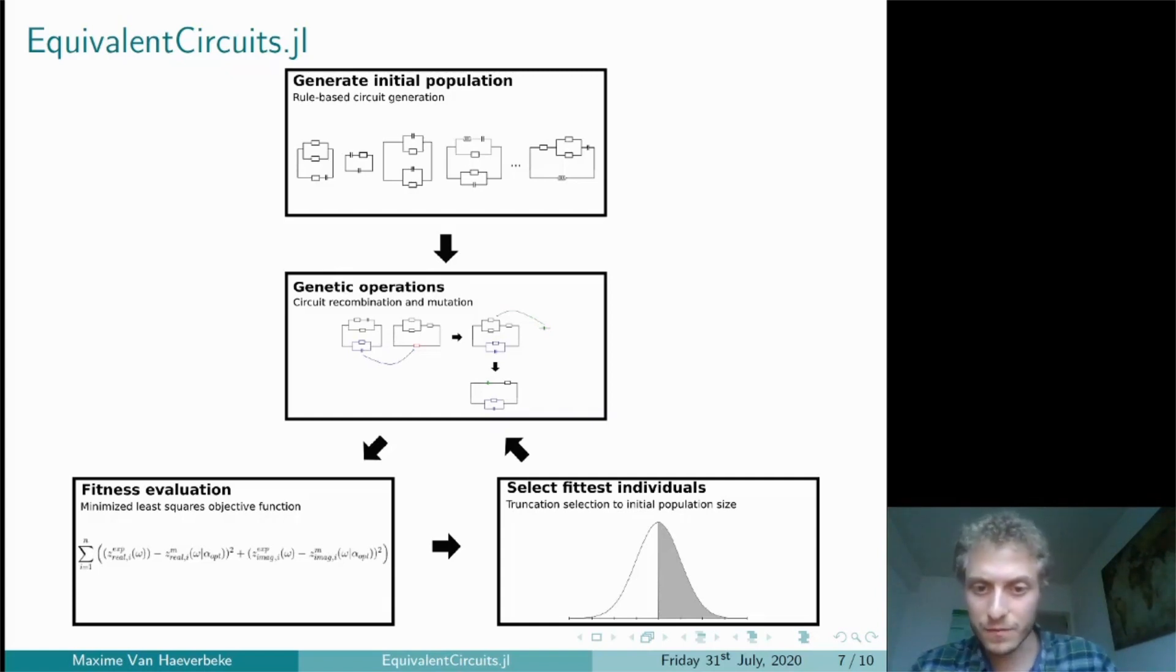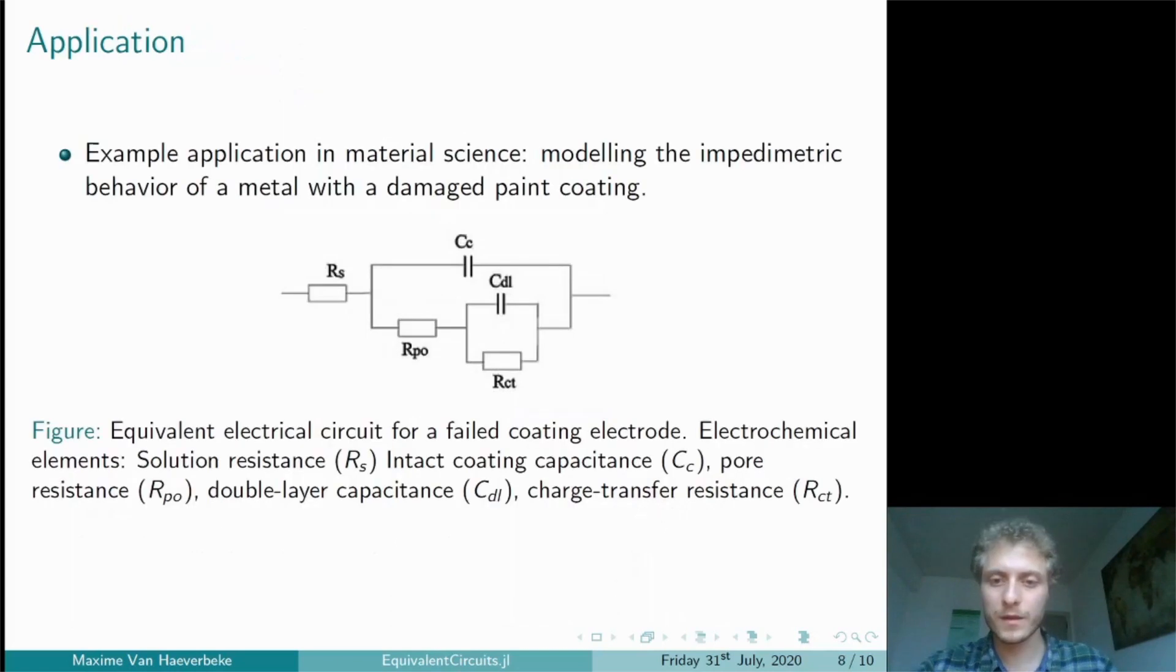Then the fittest individuals are selected using truncation selection and the next generation begins. The example I've chosen to illustrate the module is one from material science. The circuit you see here on the slide is used to model the electrochemical behavior of a metal electrode with a damaged paint coating.